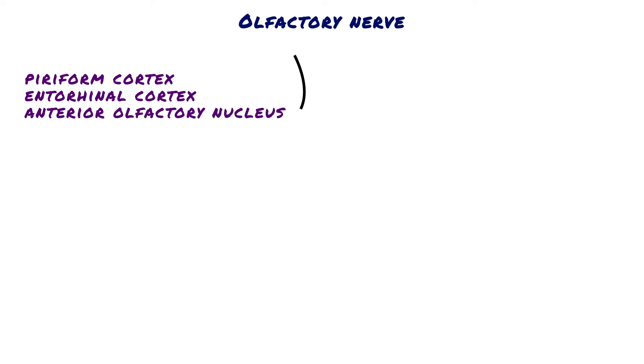These regions are also known as olfactory cortex. Piriform cortex, located in the anteromedial part of the lower face of the temporal lobe, is the largest cortex region related to the sense of smell.